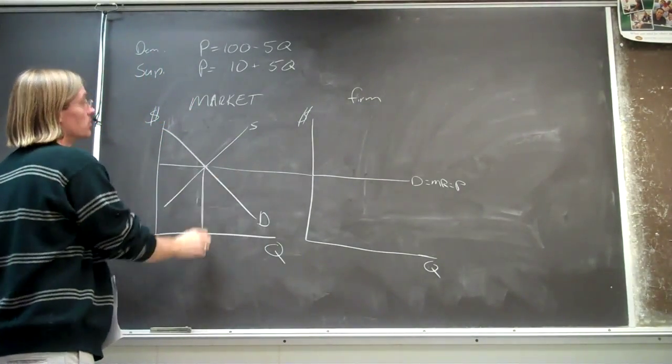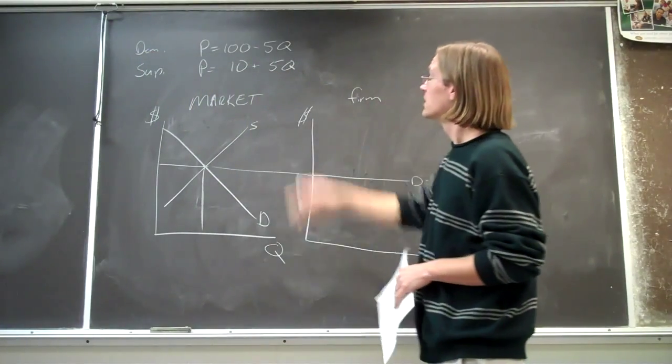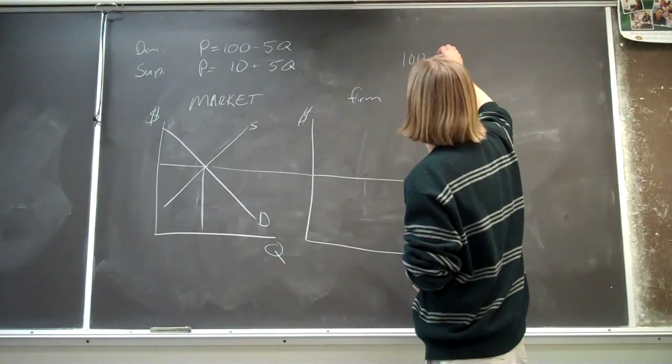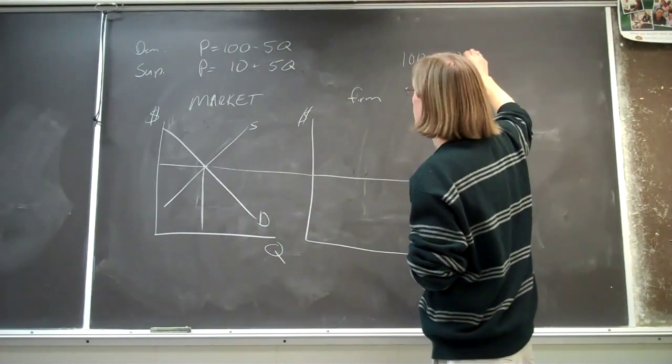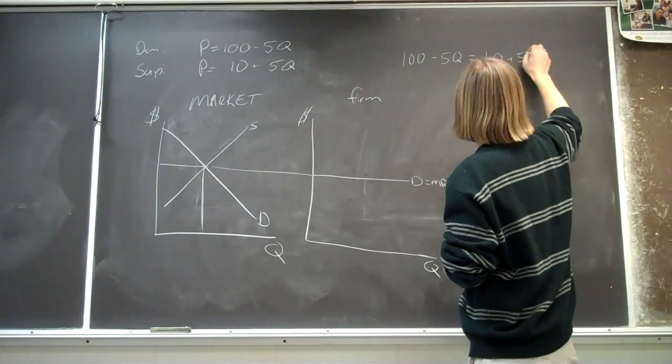we just need to set these two equations equal and solve them. So we've got the demand equation, 100 minus 5Q equal to 10 plus 5Q,